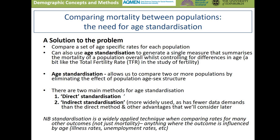If we're interested in comparing mortality between populations, there's a need to develop age-standardized measures. We can compare age-specific rates for each population and also use age standardization to develop a single measure that summarizes mortality overall while controlling for differences in age — a bit like the total fertility rate. A wider point is that these methods of standardization are very widely applied and can be used to compare rates for other outcomes, not just mortality, where our outcome is strongly influenced by age. This applies to standardized illness rates, standardized unemployment rates, and indeed standardized rates of migration.